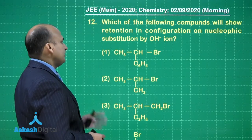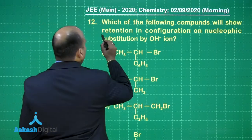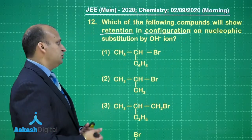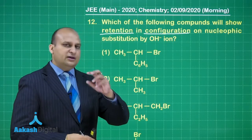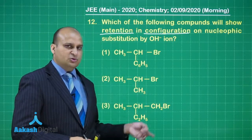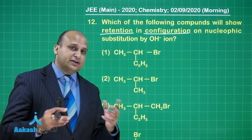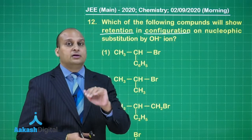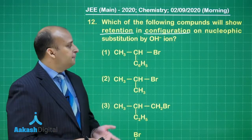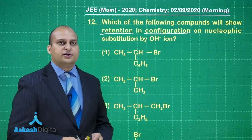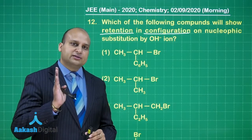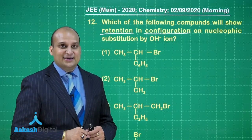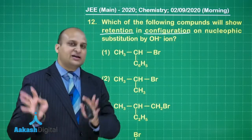Which of the following compounds will show retention in configuration on a nucleophilic substitution by OH minus ion. Here let me tell you one thing, the very first thing that you should look up whenever such a question comes up, but what generally you look up at? You look up at sir whether it will be SN1 or SN2. What you should look at is that he is asking you about the retention in configuration. First of all check whether the attack is happening on the chiral carbon or not. That should be the first thing and then you should worry about SN1 or SN2.